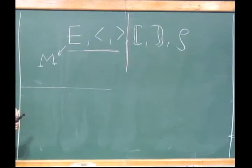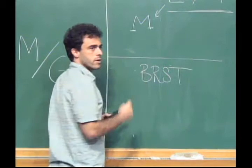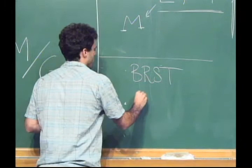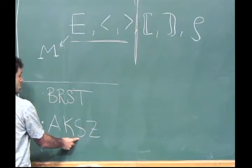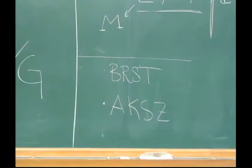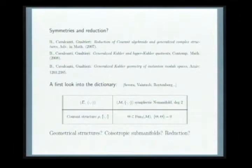This formalism is unfamiliar to most mathematicians but turns out to be very familiar to physicists. It's related to supermanifolds, and you can find similar definitions in physics going back to the BRST method, and in a famous paper in mathematical physics known as AKSZ — for Aleksandrov, Kontsevich, Schwarz, and Zaboronsky — where this formalism of graded manifolds was developed. So let me now tell you what these graded manifolds are.